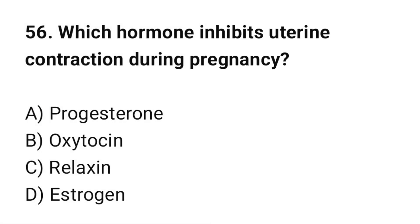Question No. 56: Which hormone inhibits uterine contraction during pregnancy? The correct option is A. Progesterone.